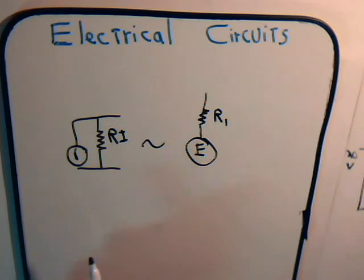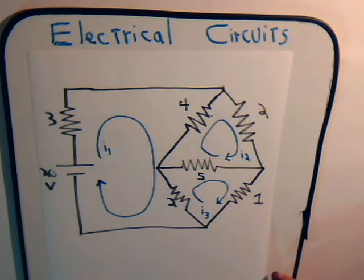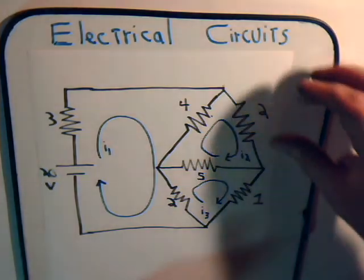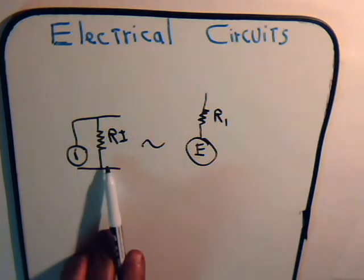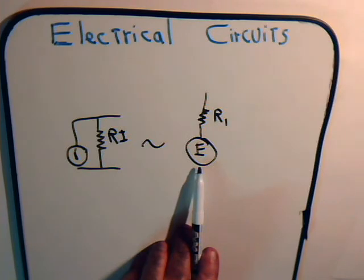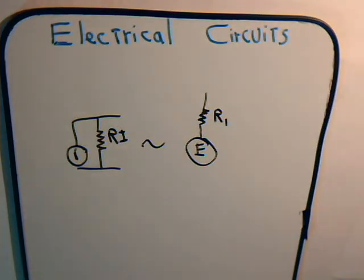In another video, we'll consider in detail how to do these source conversions. The point is, if you have a circuit and you want to use the format approach on it, but at one or more places you have a current source, and if that current source has a resistor in parallel with it, then you can convert that to a voltage source and apply the format analysis. We'll cover exactly how that's accomplished in a future video.